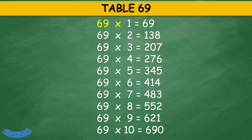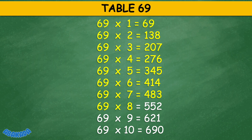Table 69: 69 times 1 equals 69, 69 times 2 equals 138, 69 times 3 equals 207, 69 times 4 equals 276, 69 times 5 equals 345, 69 times 6 equals 414, 69 times 7 equals 483, 69 times 8 equals 552, 69 times 9 equals 621, 69 times 10 equals 690.